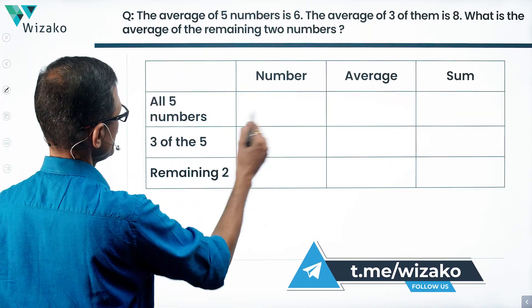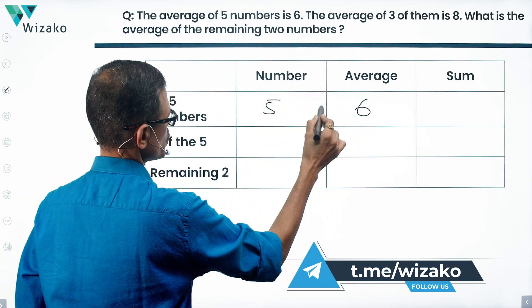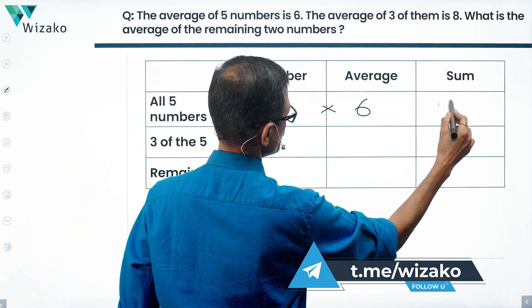Start with the first thing. All 5 numbers, we have 5 numbers, their average is equal to 6. So 5 times 6 is the sum, which is equal to 30.